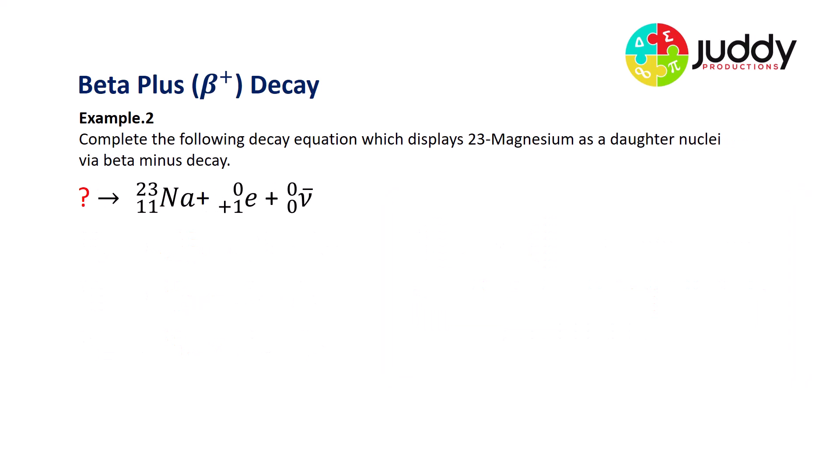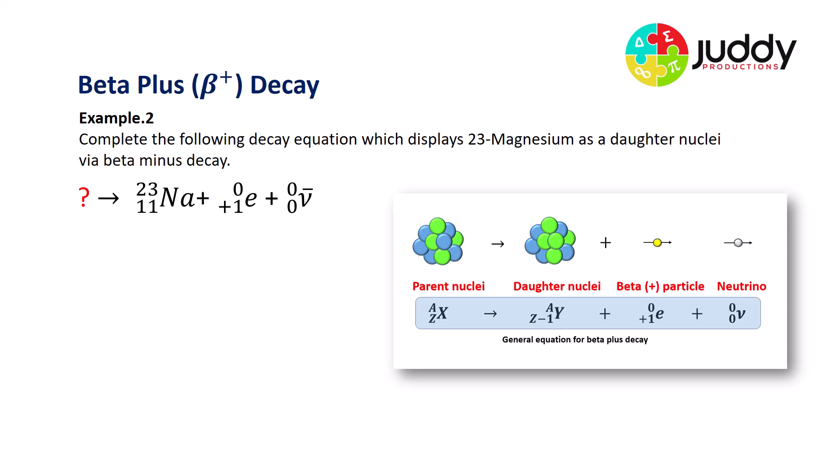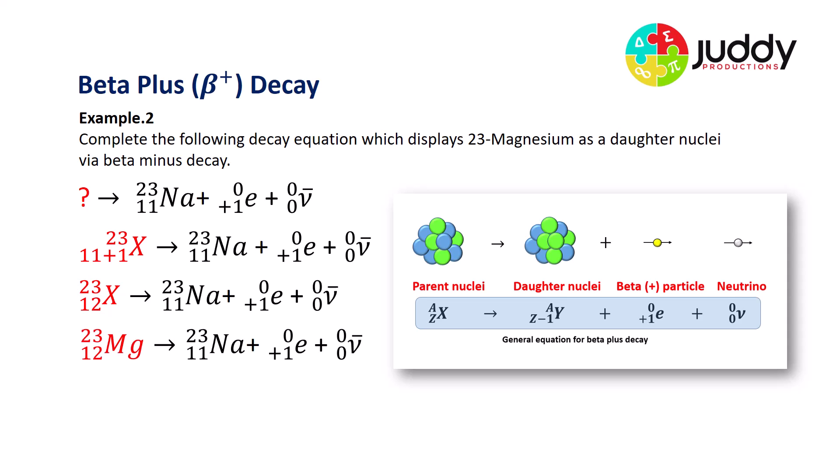Example number two, complete the following decay equation, which displays 23 magnesium as a daughter nuclei via beta minus decay. So in this example, we're given the daughter nuclei and we wish to work backwards for the parent nuclei. So here's our general equation for beta plus decay. So we know the parent nuclei has exactly the same mass number as the daughter nuclei. That's quite simple. And we also know that the parent nuclei has one more proton than does the daughter nuclei. So that means our unknown parent nuclei will have a mass number of 23 and an atomic number of 12.